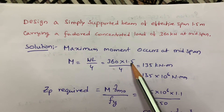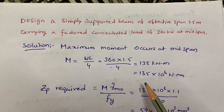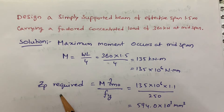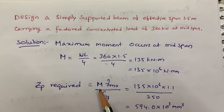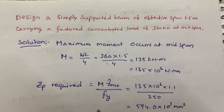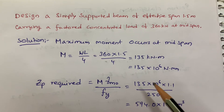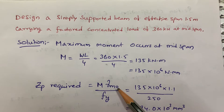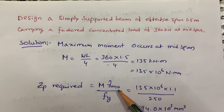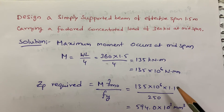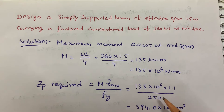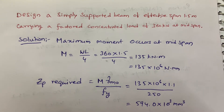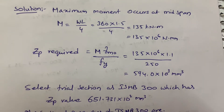After calculating the moment, I am calculating ZP required — the plastic section modulus required — using M × γm0 / fy. This formula is available in the code book. γm0 is the partial safety factor from code book Table 5, page 30, which is 1.1. fy is the yield stress, 250 MPa. I got the required ZP value.